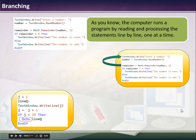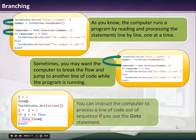As you know, a computer runs a program by reading and processing statements one line at a time. Sometimes you want the computer to break the flow or jump from one line of code to another while the program is running. You can instruct your computer to process a line of code out of sequence by using the goto statement.